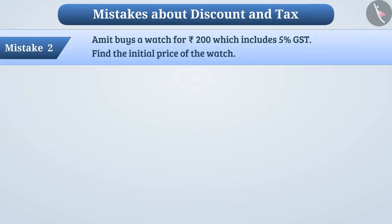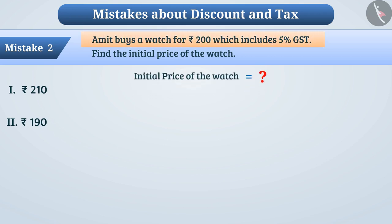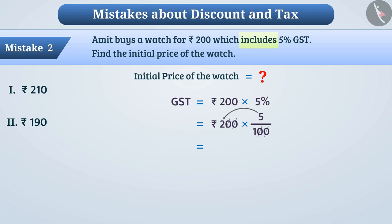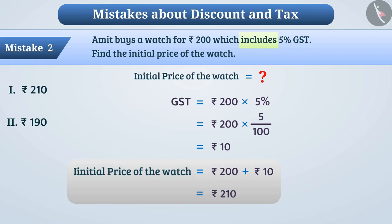Mistake 2: A buyer buys a watch for Rs. 200, which includes 5% GST. Find the initial price of the watch. Some children ignore the key word 'includes' in the question. They calculate Rs. 200 multiplied by 5%, i.e., 200 × 5/100, to find the GST, which gives Rs. 10. They then add it to Rs. 200 and get an initial price of Rs. 210. But this is the wrong answer — option 1 is incorrect.